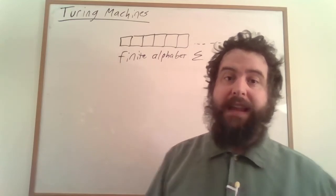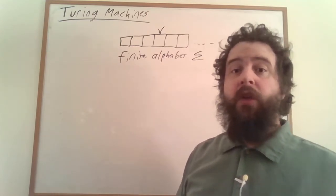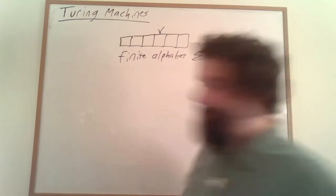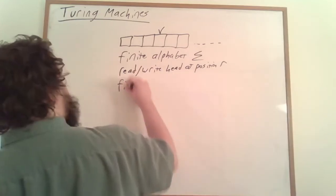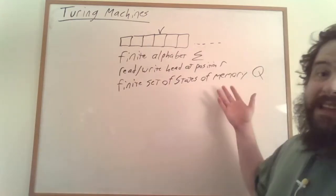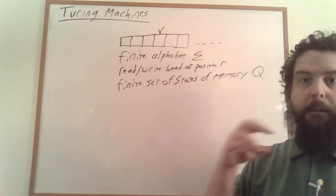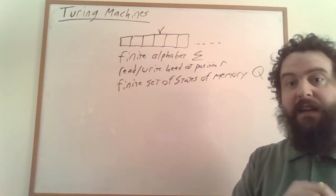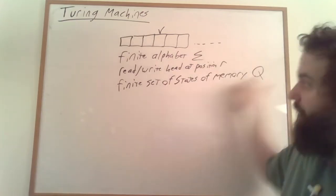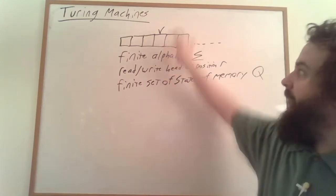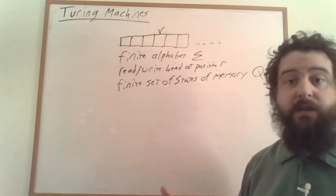There's also going to be a read-write head located at some position on the tape. At any particular time, we're only allowed to read and write to the memory at that particular position. We're also going to have a finite set of states of memory, similar to what we have with finite state automata, where this memory is separate from the memory on the tape. Modern computers have a similar sort of duality between memory in registers on the CPU that's very easy and quick to access, and then memory that's a little bit harder to access.